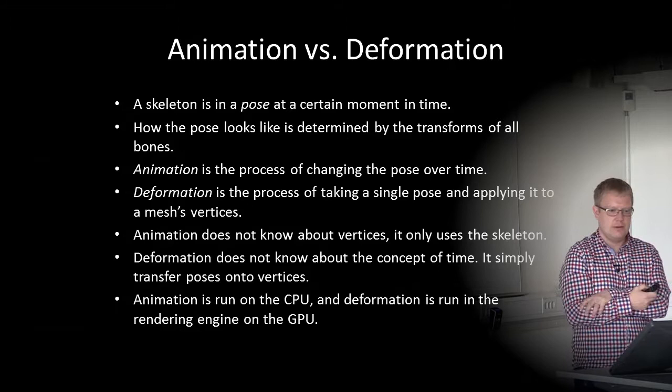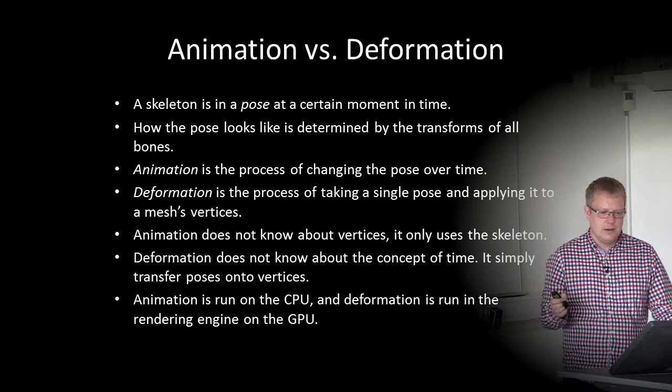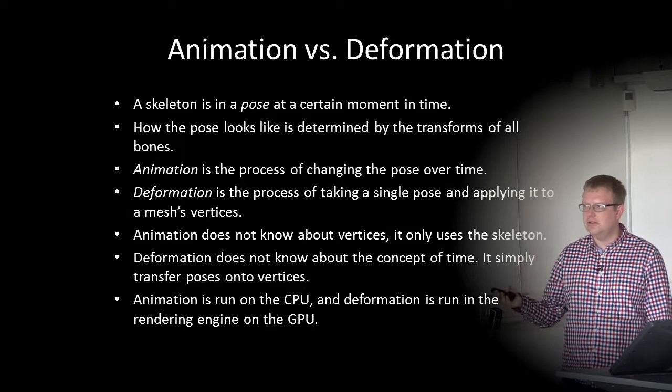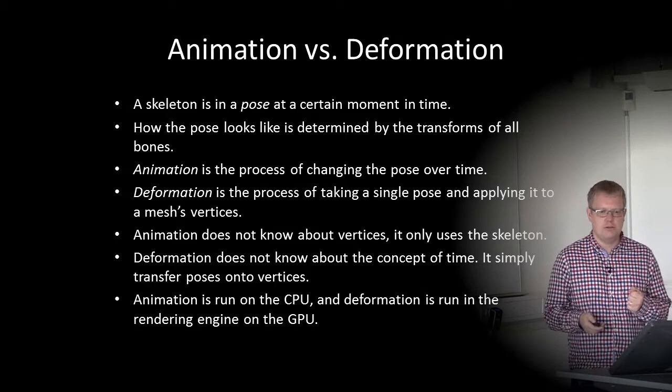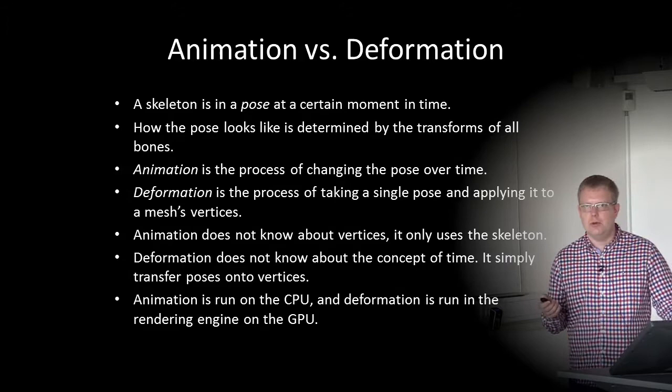Animation does not know about vertices — it only uses a skeleton or rig. And deformation doesn't know about the concept of time; it simply transfers the current pose onto vertices. Animation is run on the CPU where we create running or jumping animations, and deformation is run in the rendering engine on the GPU in the vertex shader.